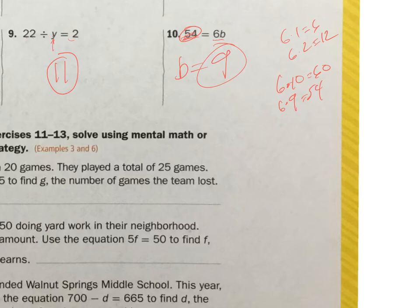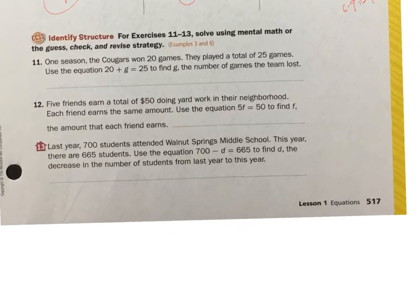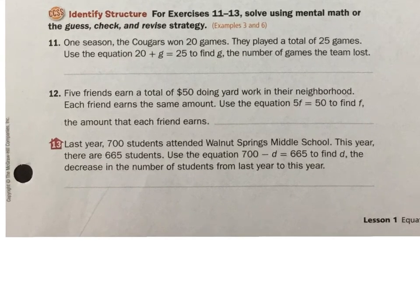Alright, let's do 11, 12, and 13. One season, the Cougars won 20 games. They played a total of 25 games. Use the equation 20 plus g equals 25. And g is how many they lost. So it's going to be 20 plus 5 is going to get me to 25. So they lost 5 games. Sounds like a good season to me.